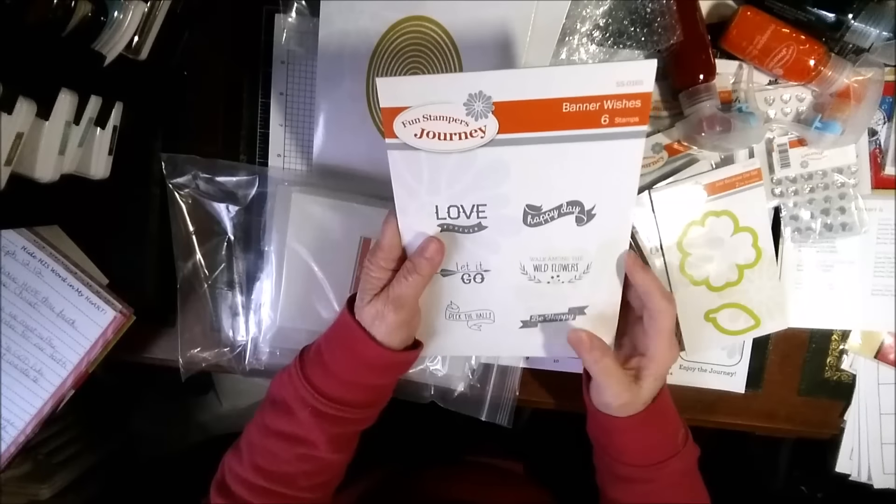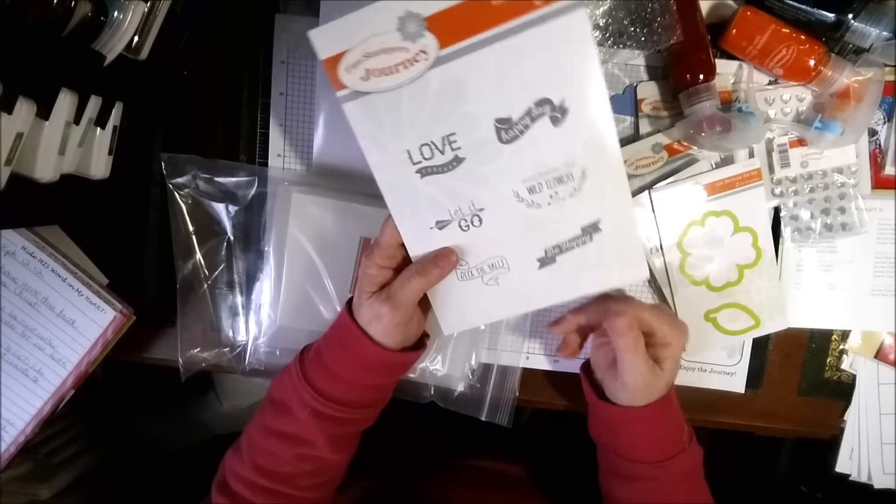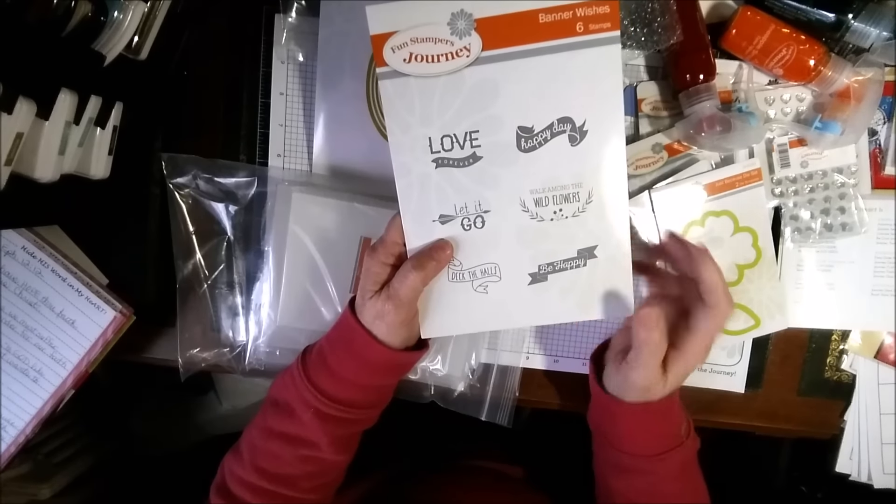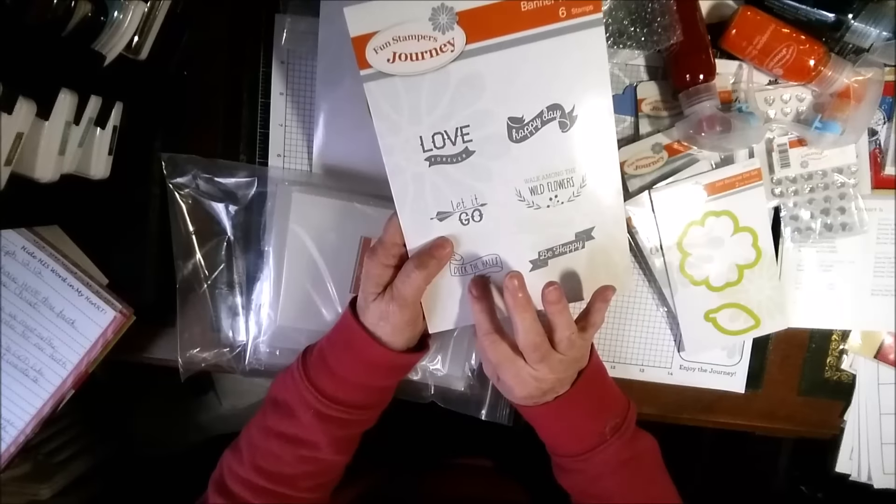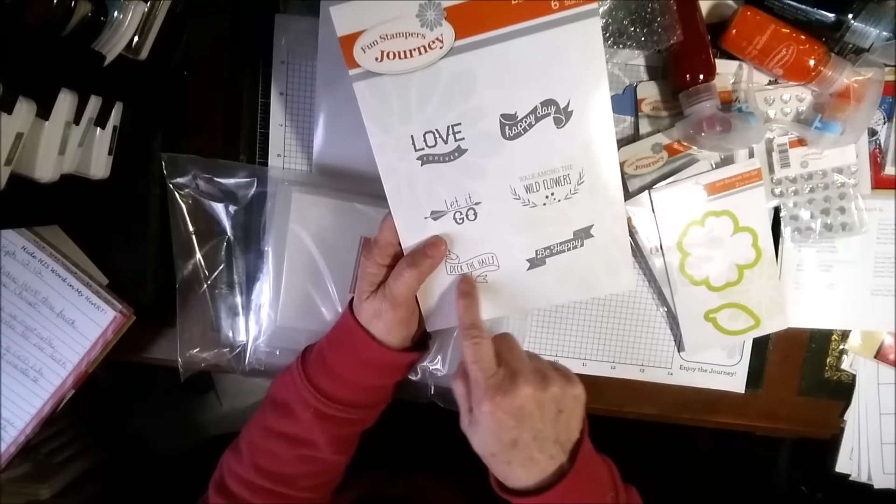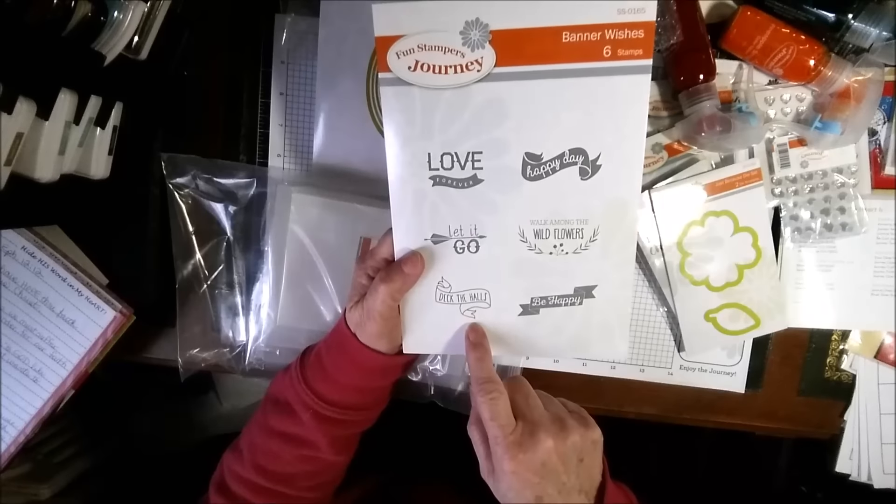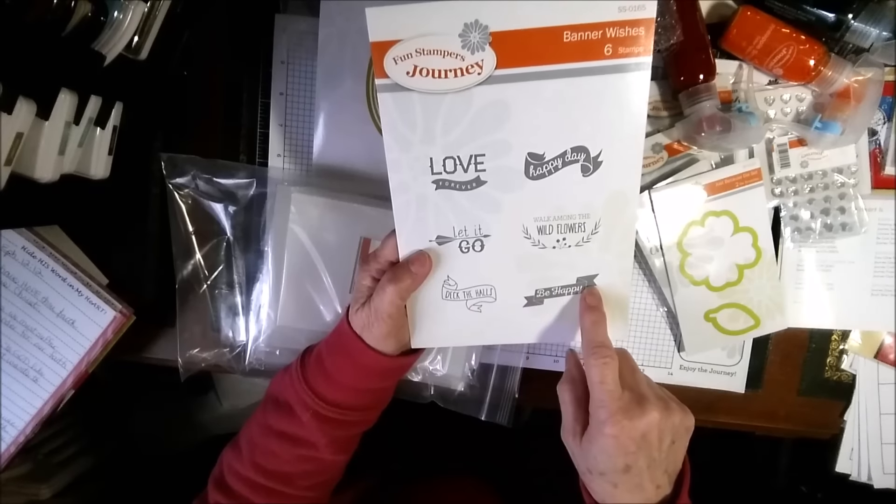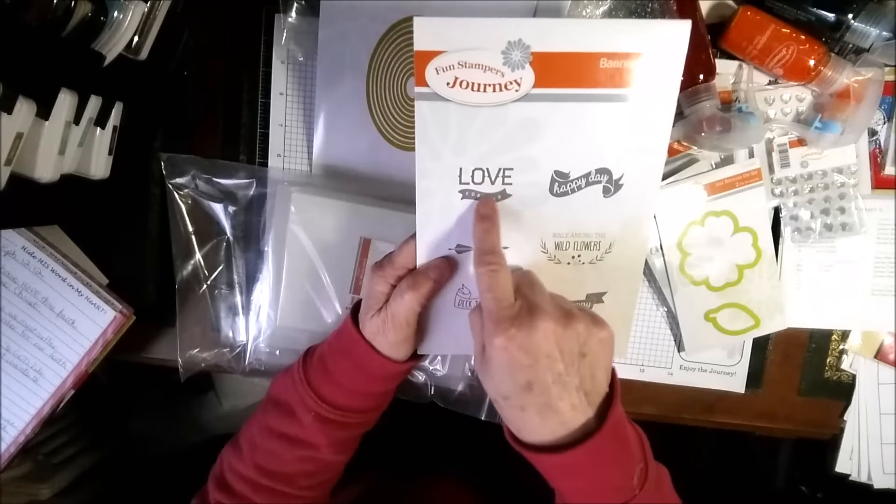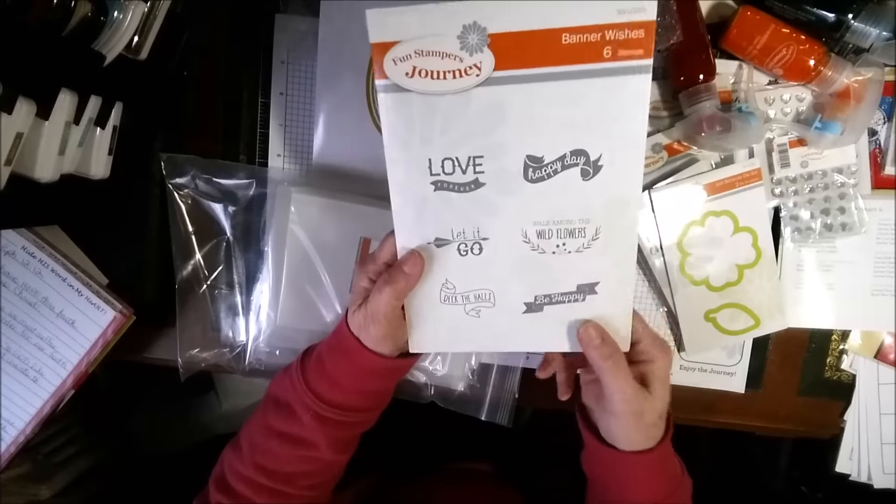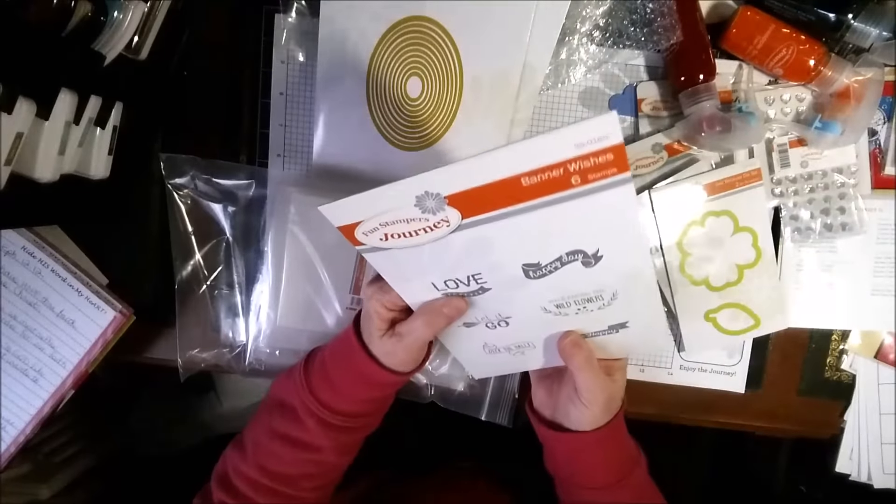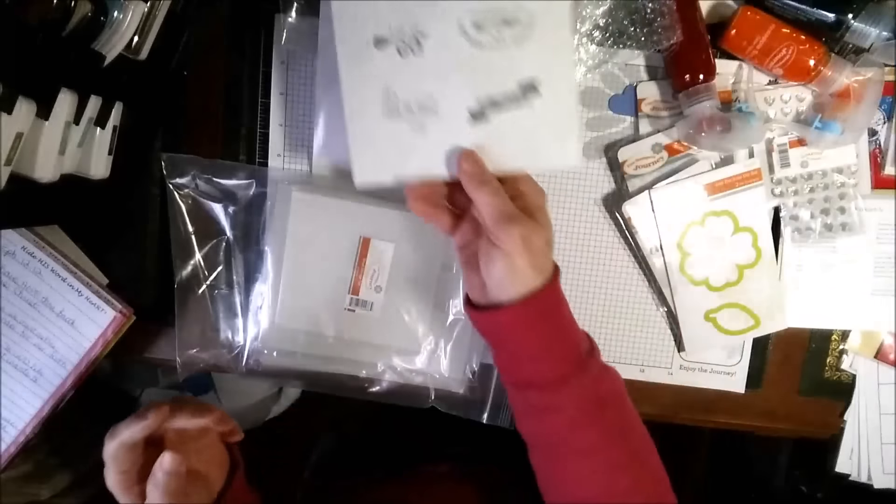And I got this. The banner wishes. I just like this. I saw this before and I almost got it. But I didn't. When I got it before, I was looking for Christmas. And all I saw in here was Happy Day and Deck the Halls. So I didn't get it. But then I saw Be Happy. And that could go on a Happy Birthday card. Or Love Forever. Or Let It Go. Walk Among the Wildflowers. I really liked this stamp set. So I got this one. It's called Banner Wishes.